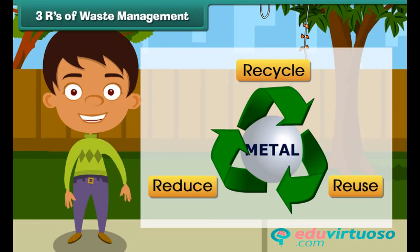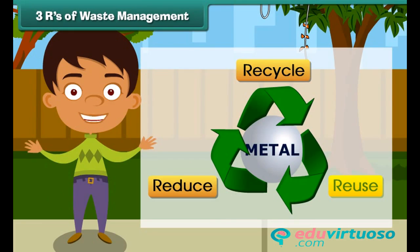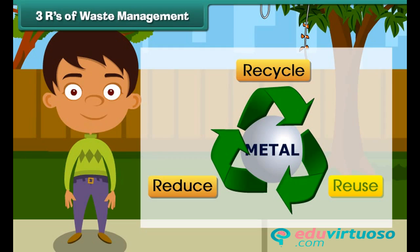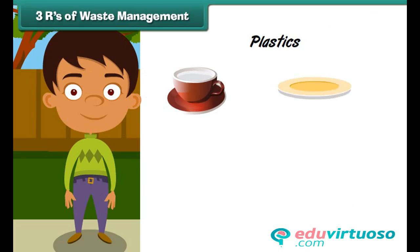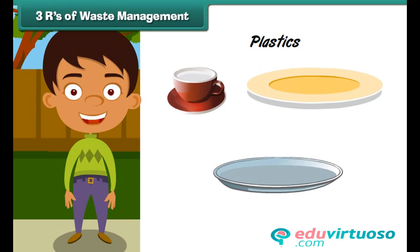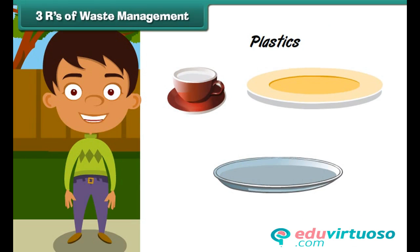The second R stands for Reuse. Reuse means to use an item more than once. Plastic cups, plates, and utensils are usually disposed of after a single use. Instead, we must reuse them after washing.